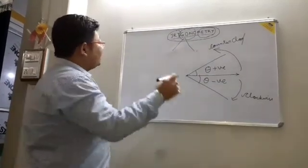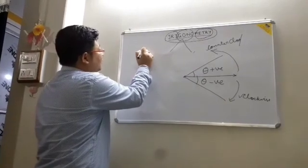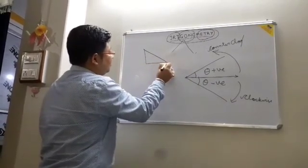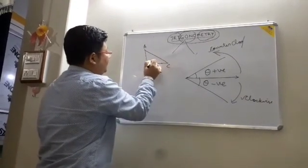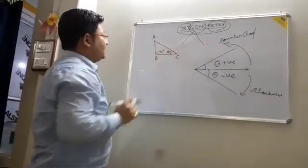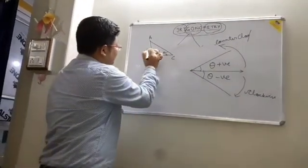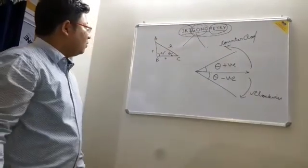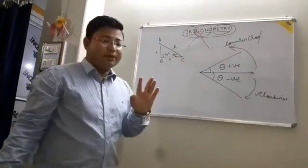Now we will study about the trigonometric ratios. We will have to draw a right angle triangle — A, B and C — where this angle is 90 degrees and this angle is theta. Here we have the perpendicular, the base, and the hypotenuse. There are 6 trigonometric ratios.